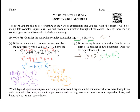Testing with X equals 1: 1 plus 2 times 1 plus 4. Well, 1 plus 2 is 3, and 1 plus 4 is 5. Multiply those and you get 15, which confirms it's an equivalent expression. Which type of equivalent expression we need depends on the context of what we're trying to do with the math. For now, we want to get practice writing various expressions in equivalent form and being able to test that equivalency.